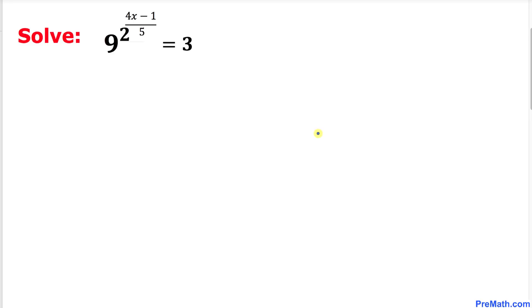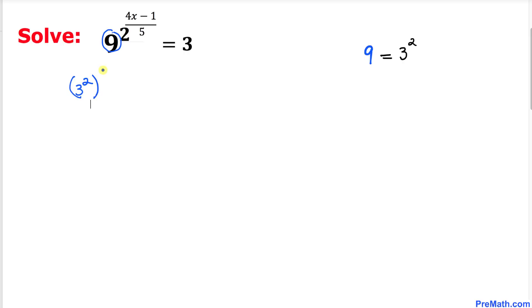Let's get started with the solution. The first thing we are going to do is look at the base on the left hand side, which is 9. Here I have copied down 9, and 9 can be written as 3 to the power 2. So we can write this 9 as 3 power 2, then power 2, then power (4x minus 1) divided by 5, equals 3.